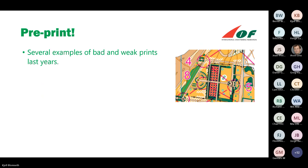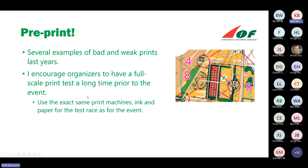I encourage the organizers to have a preprint — a full-scale print test — a long time prior to the event, using the exact same print machines, ink, and paper for the test race as for the event. We have had several examples of bad and weak prints in recent years, so we have to do this check to be sure that the competition map is in the shape we want. If it's not wet when you test it in a competition setting, you should test it in water — perhaps in the laundry — to check that the colors stay on the paper.